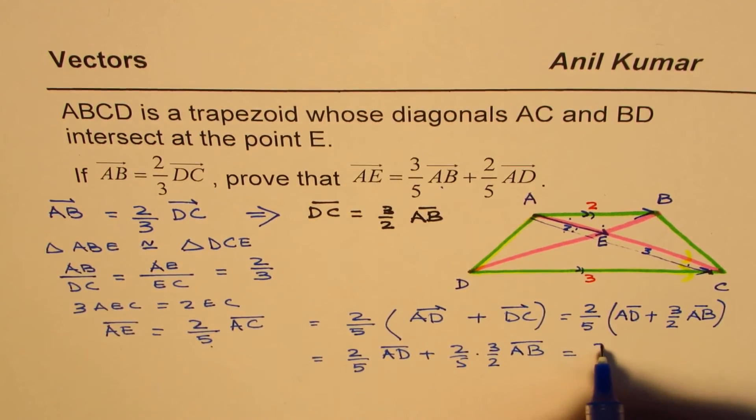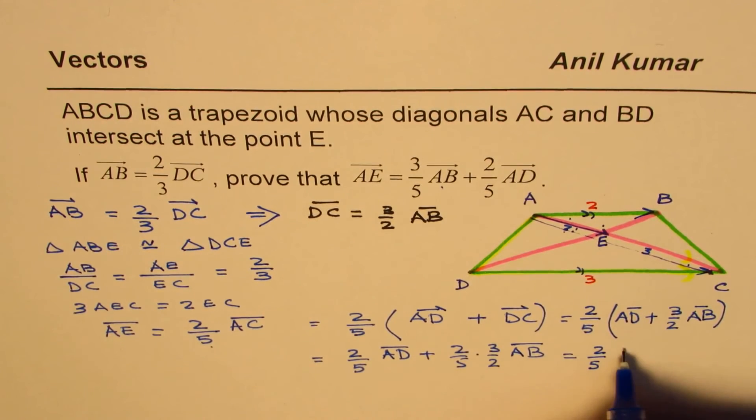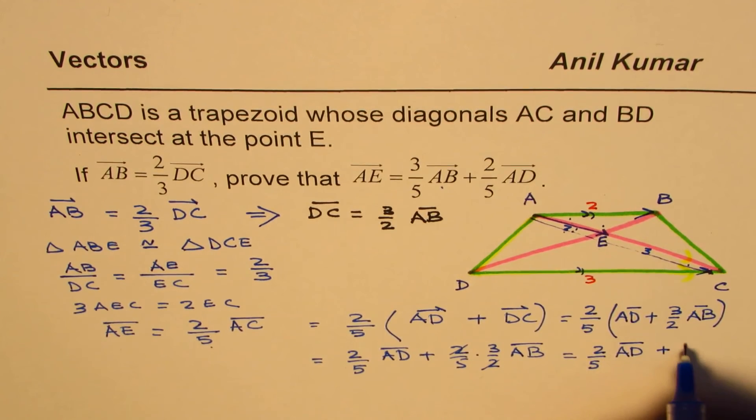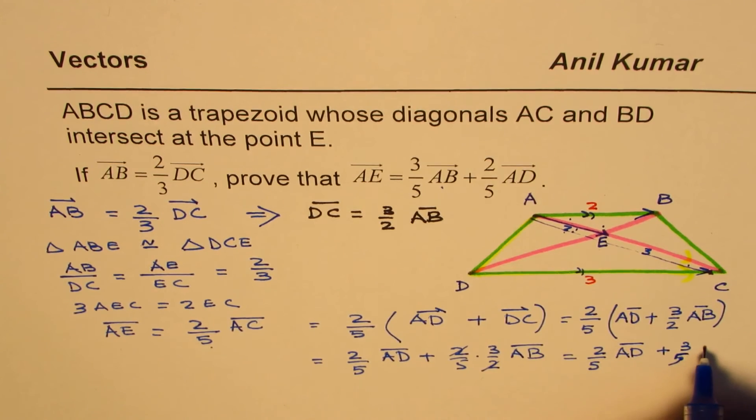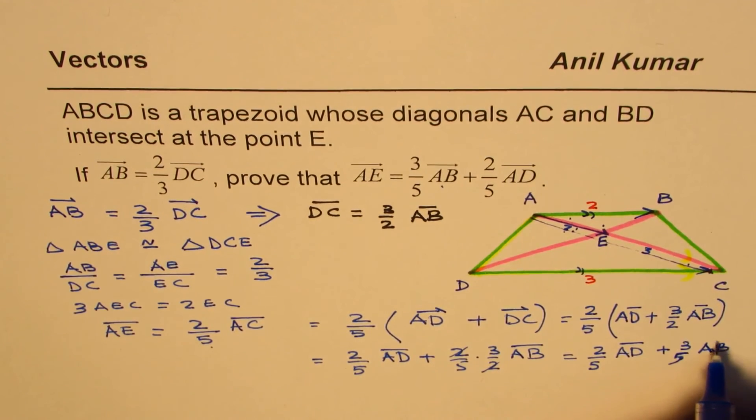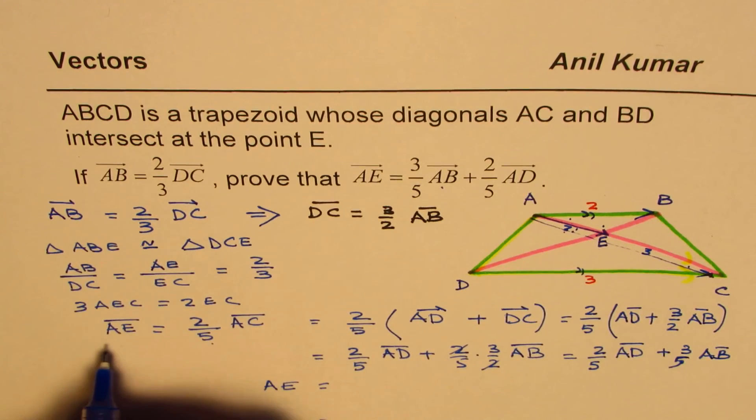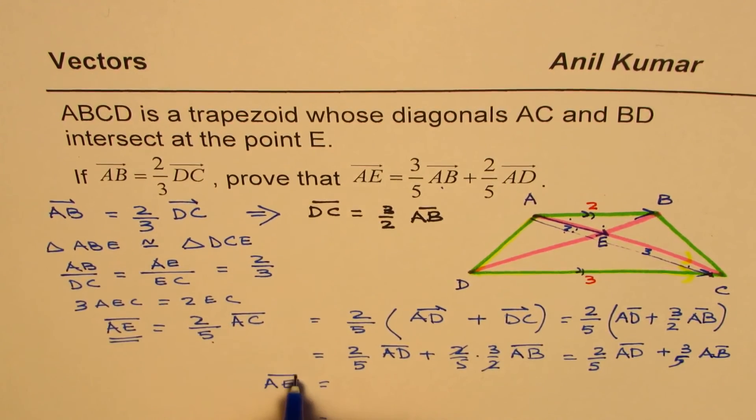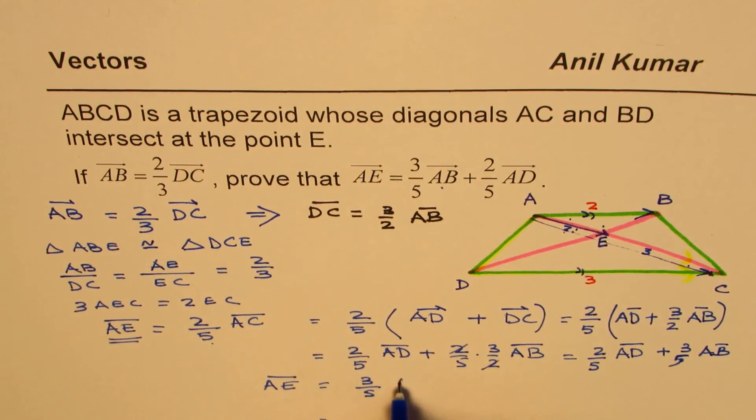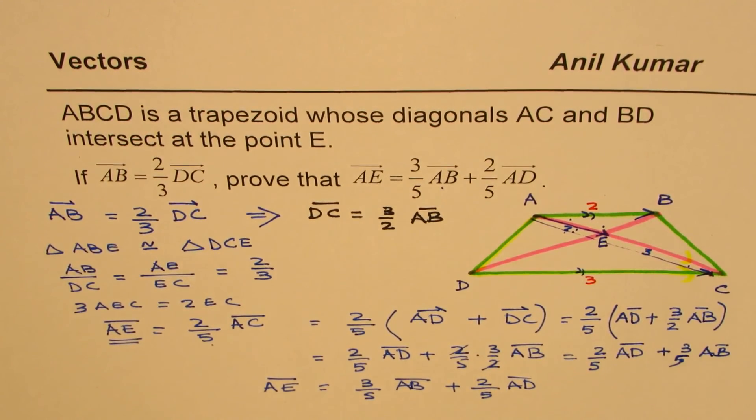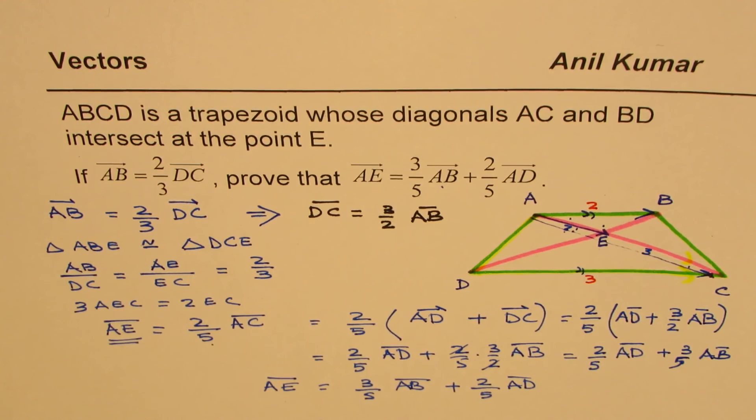And that gives you the result. So we have 2 over 5 of AD. This 2 and 2 cancels 3 over 2, giving 3 over 5 of AB. So that's how we can prove that AE is equal to 3 over 5 of AB plus 2 over 5 of AD. Just rearrange. So that's how we can solve this question.